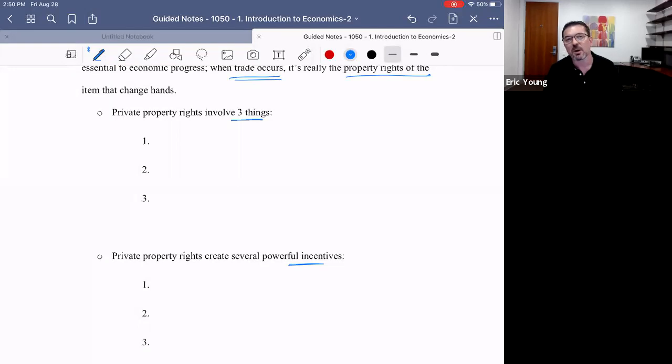Let's start with what property rights involve. When we say that you have property rights, what does that mean? The first thing property rights involve is the right to the exclusive use of a property, including the right to exclude others. So property rights involve—and a lot of people don't like this—but it includes the right to exclude others. So number one, property rights involve the right to exclusive use of the property, including the right to exclude others. We'll say exclusive rights, exclusive use.